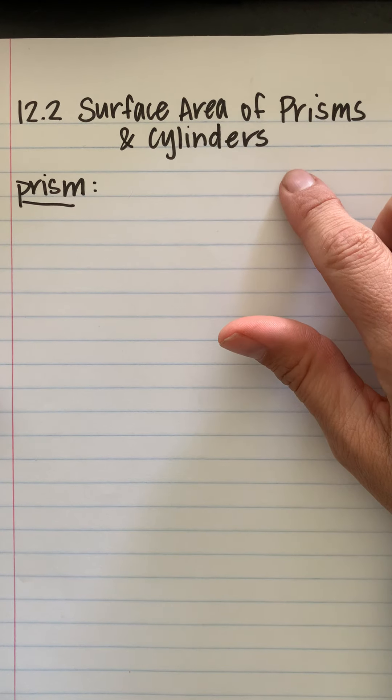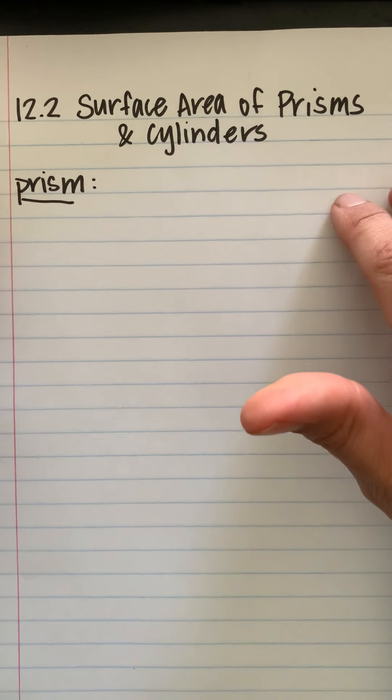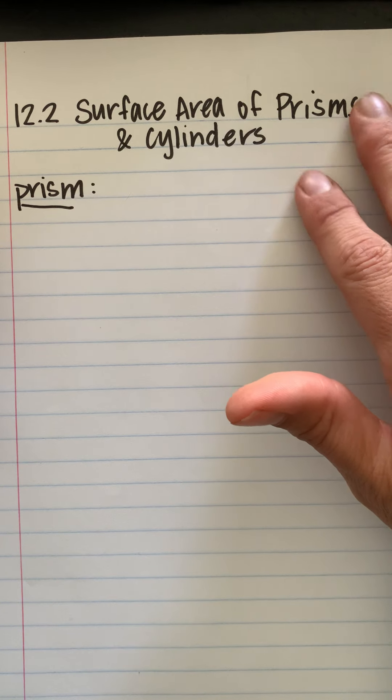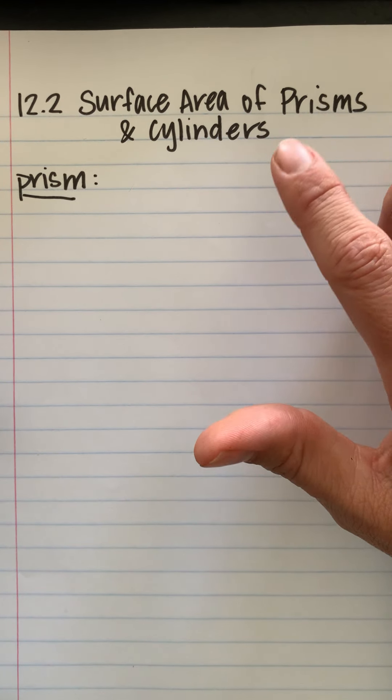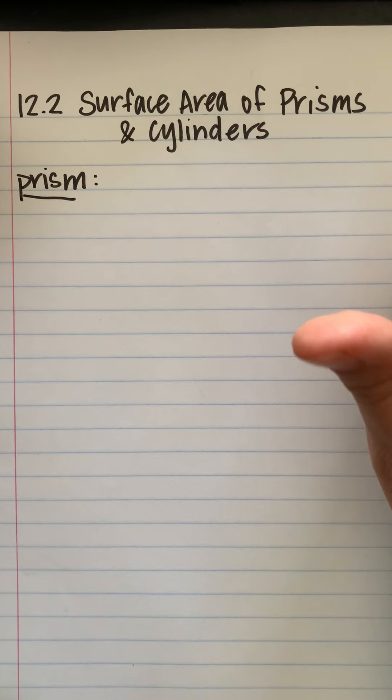We're talking about surface area of prisms and cylinders today — that's in chapter 12. I skipped over the first section; if you're interested, it has more vocabulary. But I want to talk about surface area because if you look up geometry on the ACT, it's definitely something that is highlighted and mentioned. I don't want to miss that section for you.